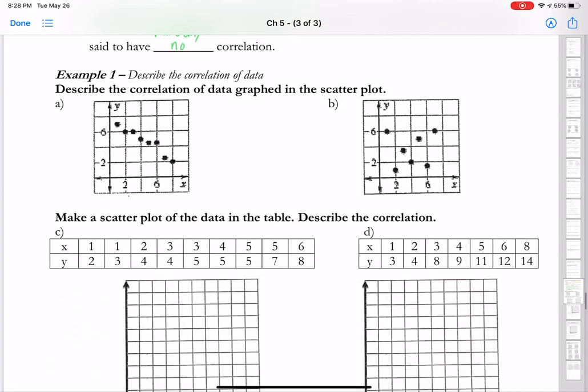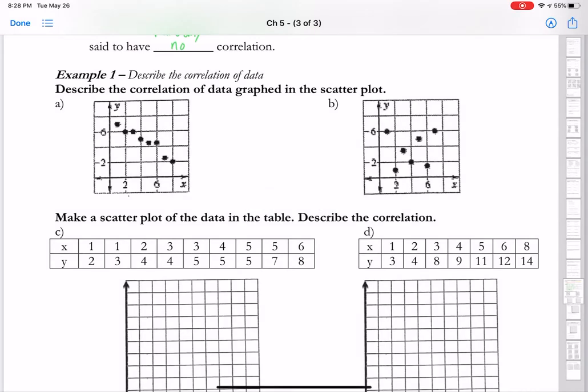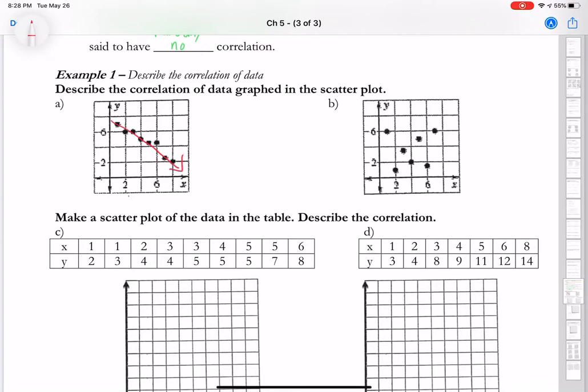So let's take a look at A. What kind of correlation does graph A have? Well, if you look at it, if I drew a line this way to slightly describe it, it's actually going from left to right down, meaning it is a negative correlation.